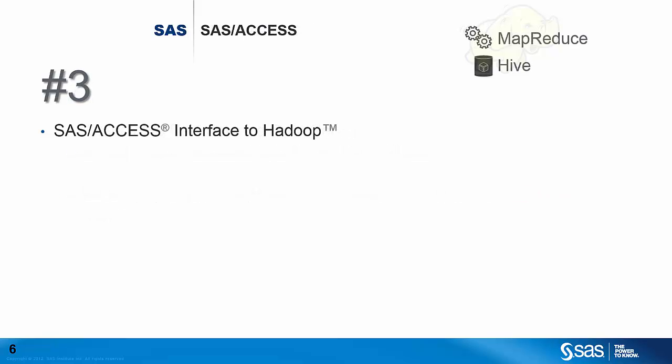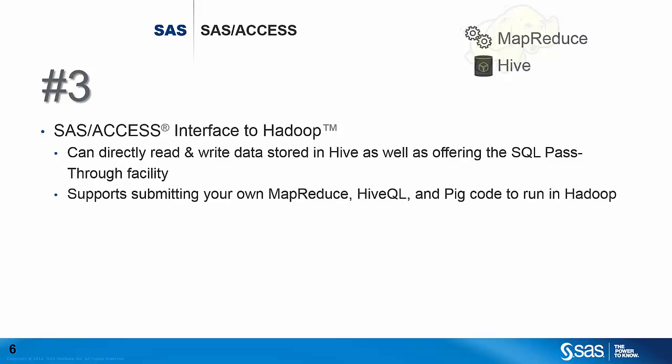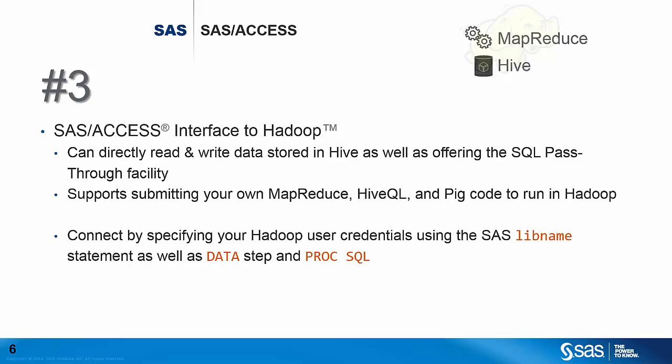Number three is the SAS Access Interface to Hadoop software. SAS Access gives us the ability to read and write data stored in Hive, as well as offering the SQL pass-through facility. It supports submitting your own MapReduce, HiveQL, and PIG code to run in Hadoop. You connect SAS Access by specifying your Hadoop user credentials through the SAS libname statement, as well as by running the SAS data step and using PROC SQL.